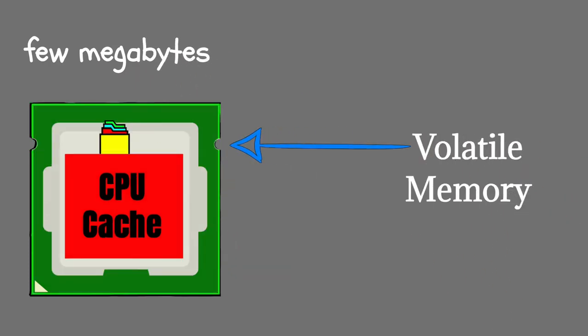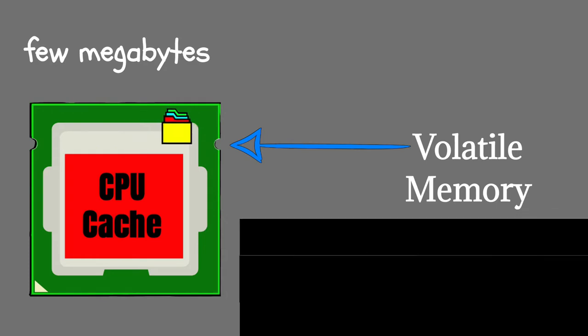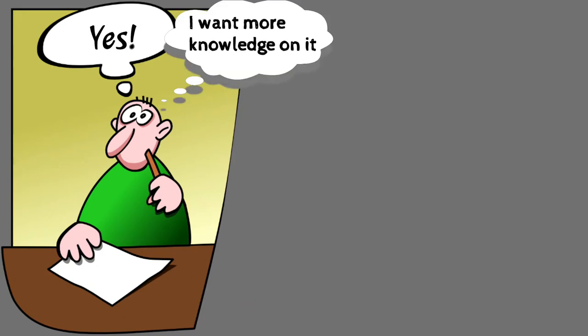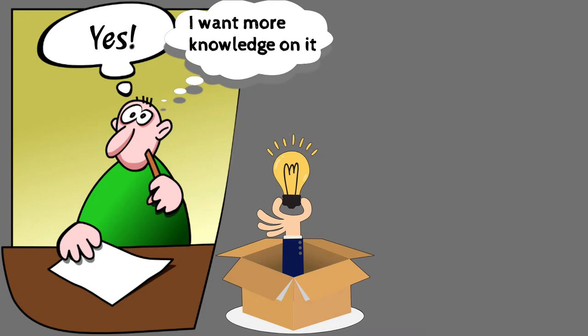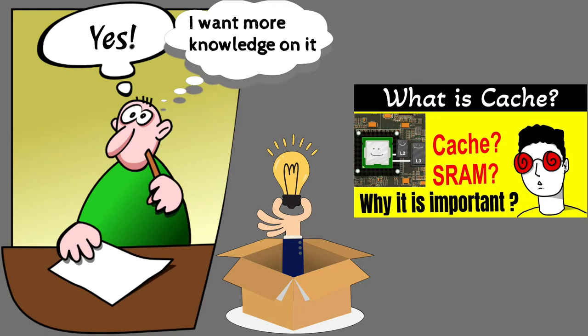Meaning that whatever data it keeps will be erased once the device is switched off. If you want to know more about cache memory in a processor, then don't worry, you need not go anywhere because we already have made that video. Just you have to watch it.